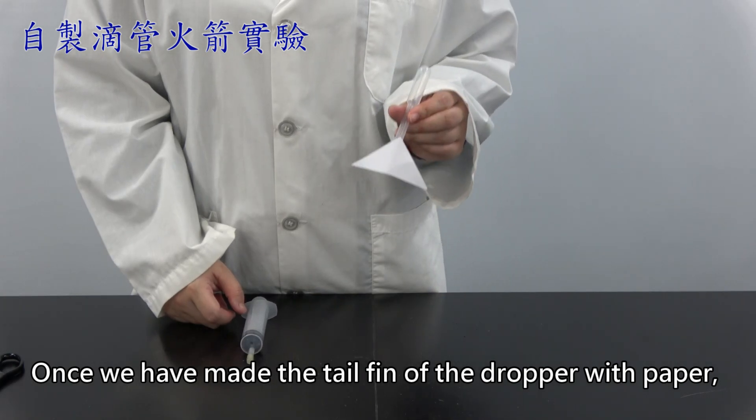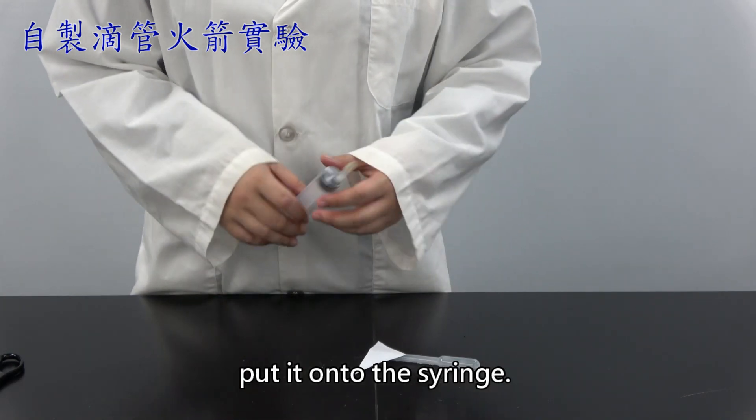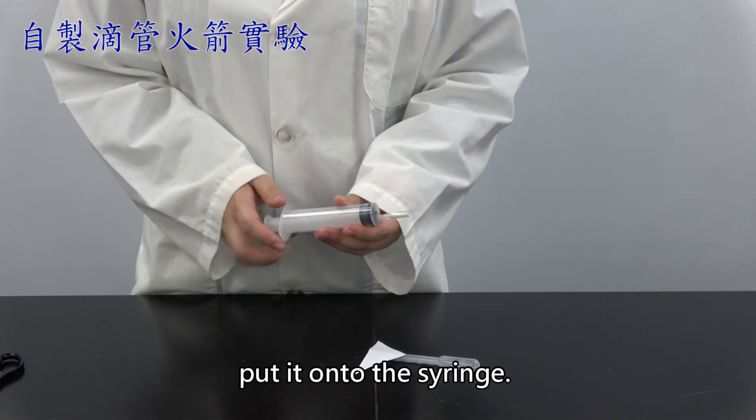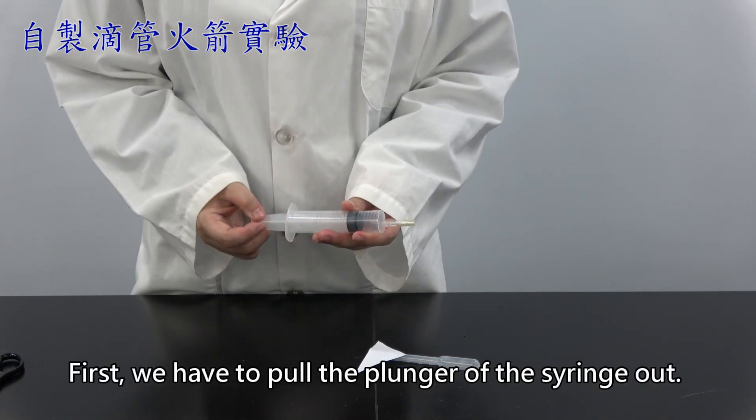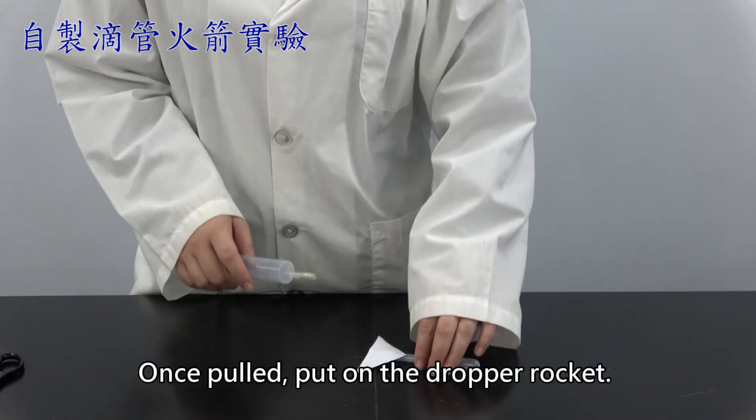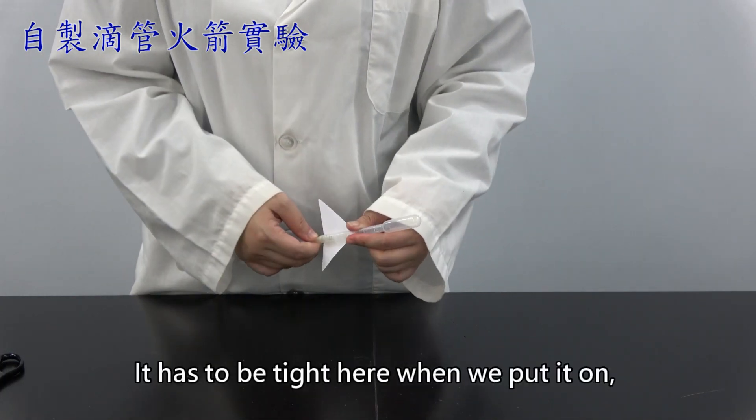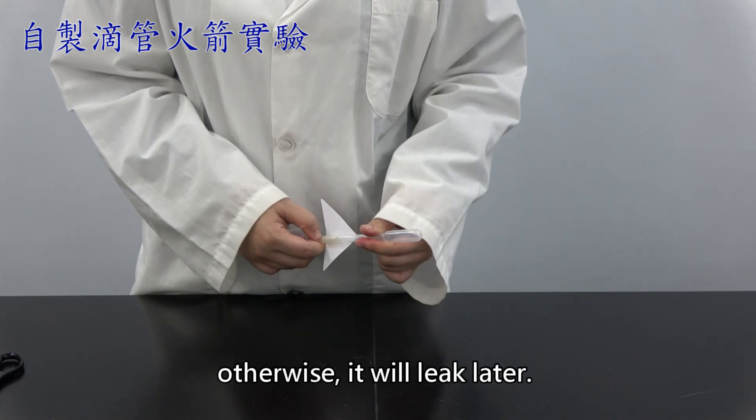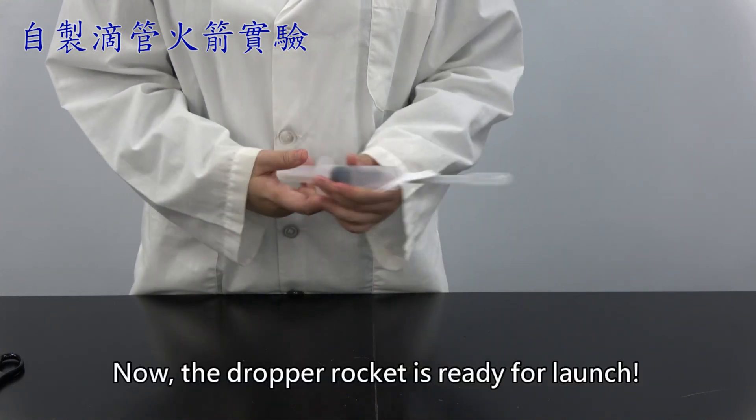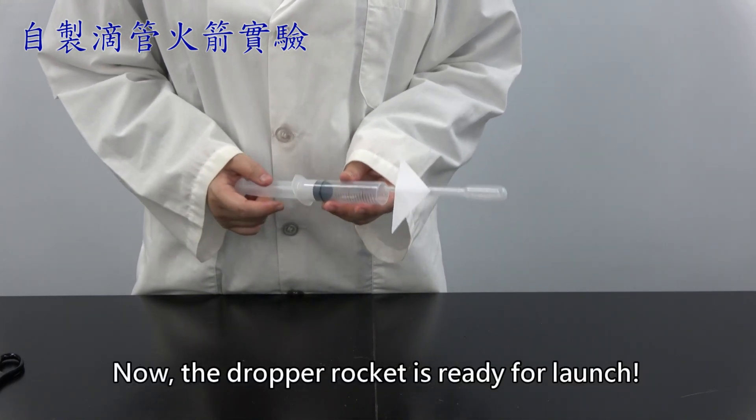Once we have made the tail fin to the dropper with paper, put it onto the syringe. First, we have to pull the plunger of the syringe out. Once pulled, put on the dropper rocket. It has to be tight here when we put it on. Otherwise, it will leak later. Now, the dropper rocket is ready for launch.